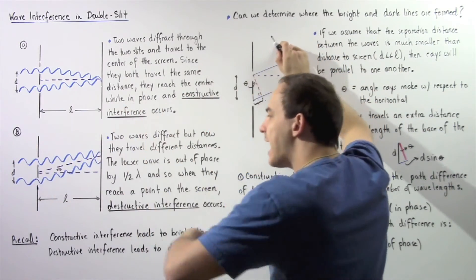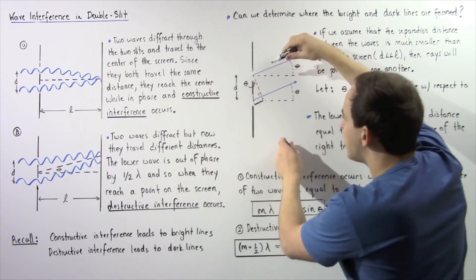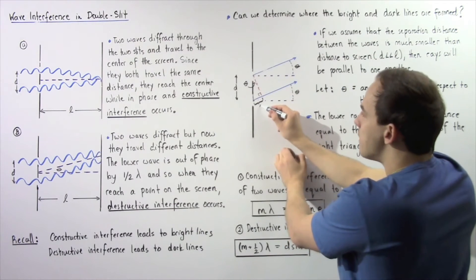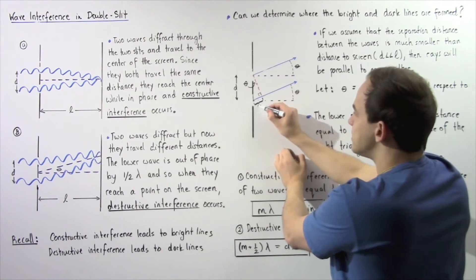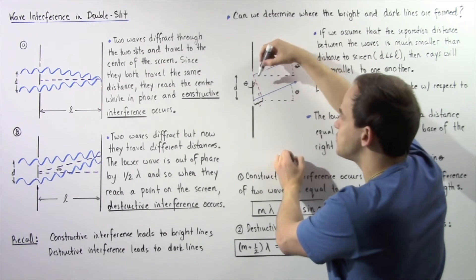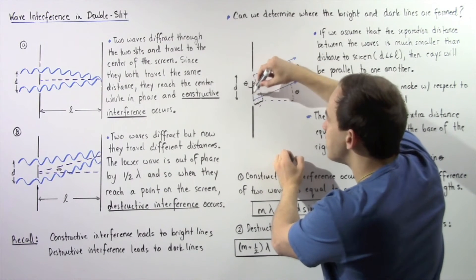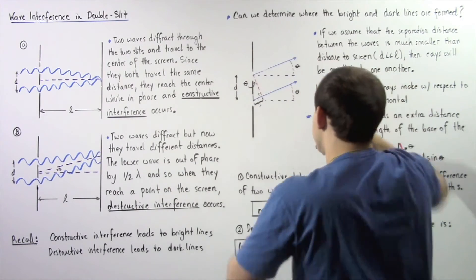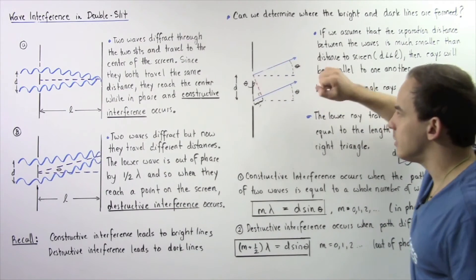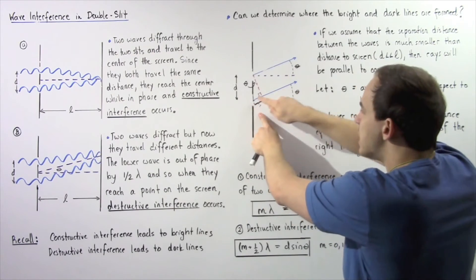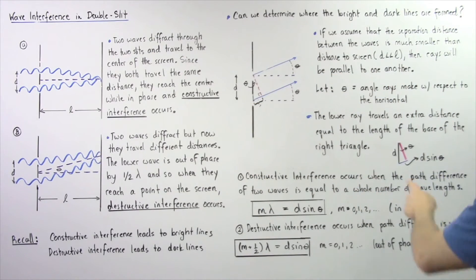This upper ray travels less than this lower ray, and this is the base of the right triangle. We have 90 degrees, this angle is theta, and the hypotenuse of our right triangle represents the distance d between our two rays. If we set up the right triangle, we can calculate what this extra distance is that the lower ray travels.